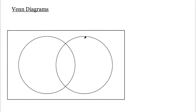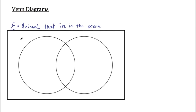The symbol for a universal set, at least what I've seen in GCSEs, is usually a capital squiggly E. That stands for universal set. So if I was saying the universal set is animals that live in the ocean, that could be the total of the things I'm talking about. Then my two smaller sets — this one might be whales and this one might be fish. This allows me to categorize things and also find things they have in common, so it's a nice visual way of representing different groups of things.